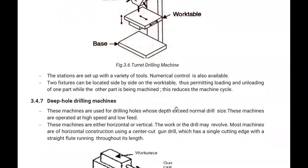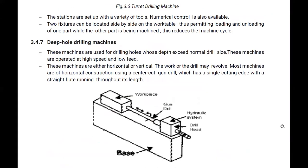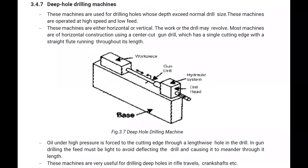Then there is the deep hole drilling machine. These machines are used for drilling holes whose depth exceeds normal drill size. They are operated at high speed and low feed. Depending upon the requirement, the machine can be either horizontal or vertical.